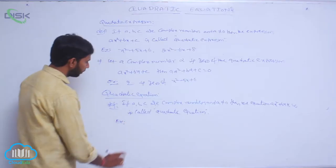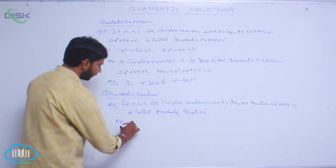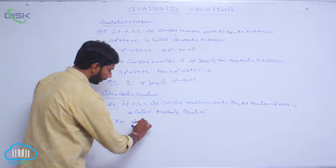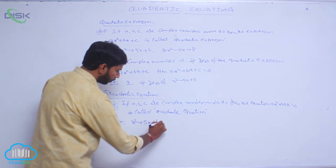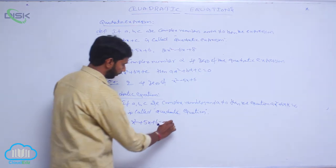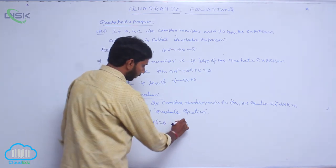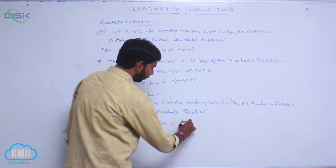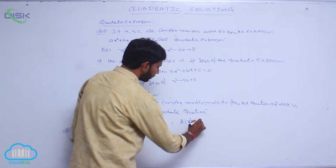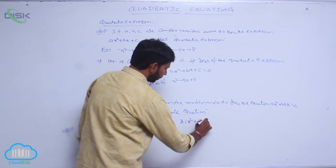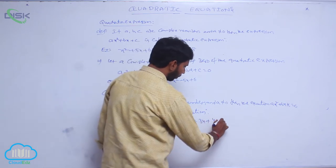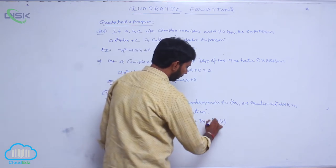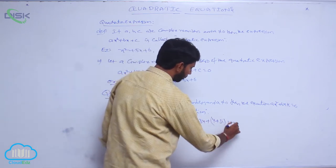Examples of Quadratic Equations are: x² + 5x + 6 = 0, and 2i·x² + 3x + (4 + 3i) = 0.